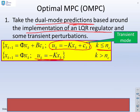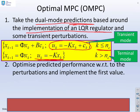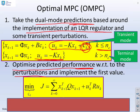So in other words, we had a transient mode for the first NC steps where you added these perturbations, and we had a terminal state. And what we want to do in OMPC is optimize predicted performance with respect to these perturbations c, that's these terms here, and obviously implement just the first value.